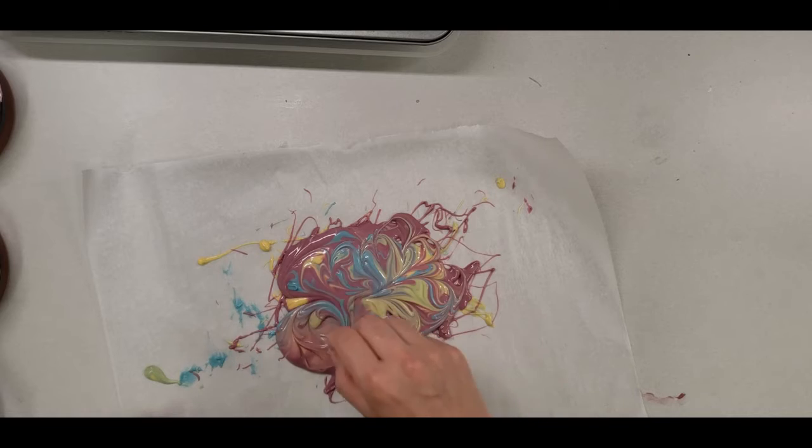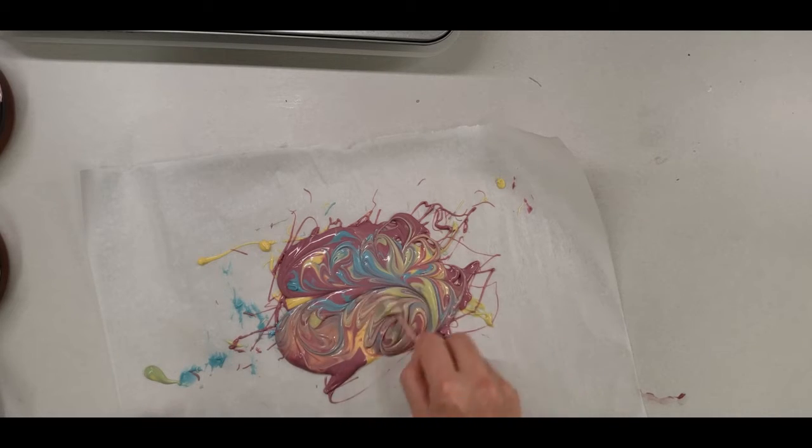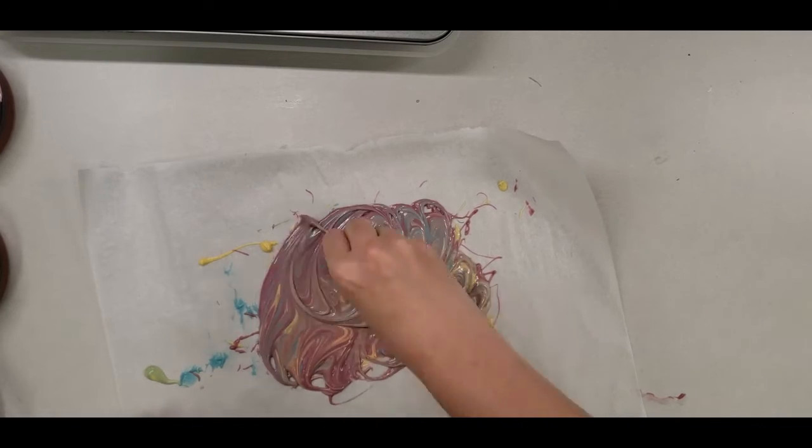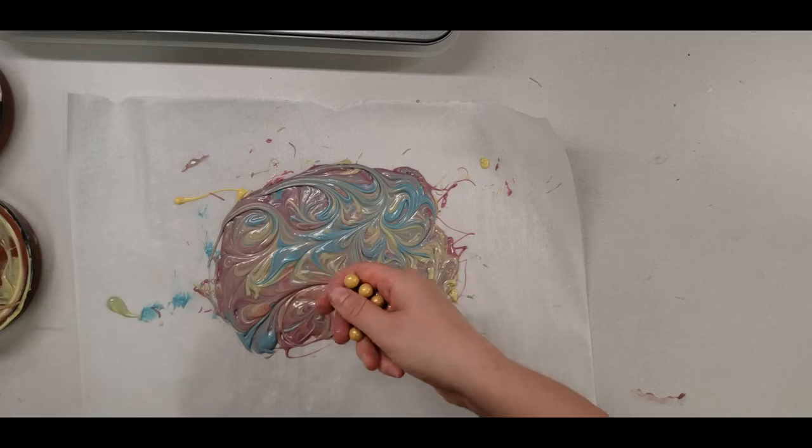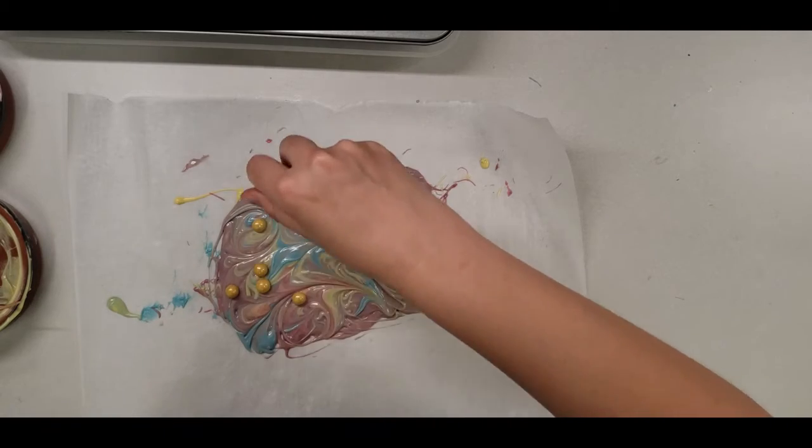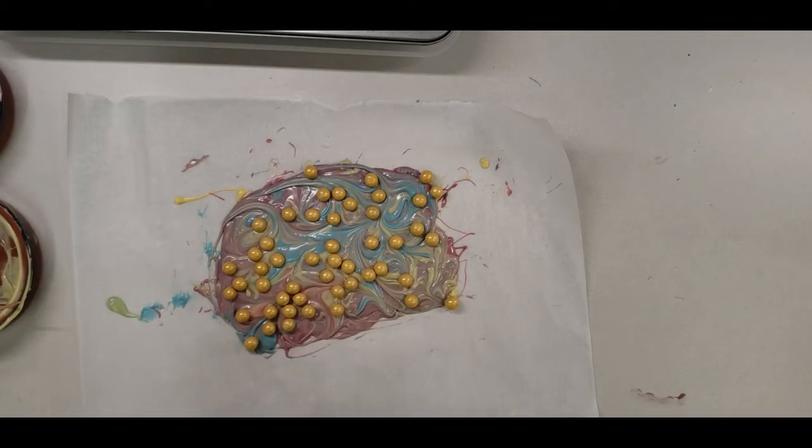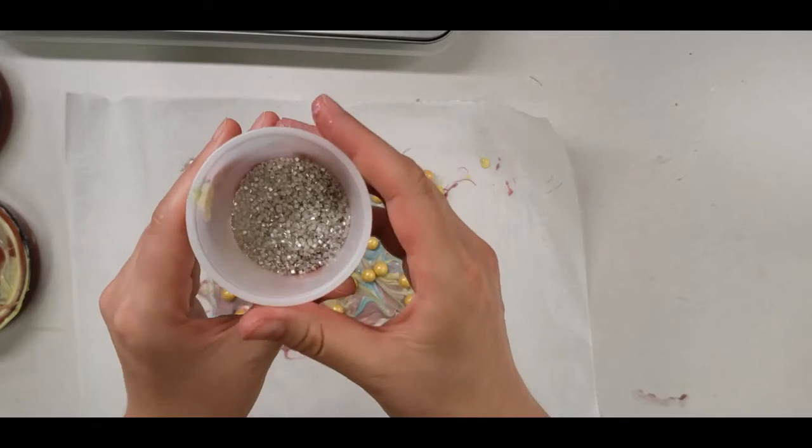Oh, that gives me blurred colors. Maybe not. There we go. There's my mermaid bark base. Now I'm going to add these chocolate pearls to it. And some silver glitter sugar.